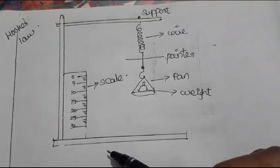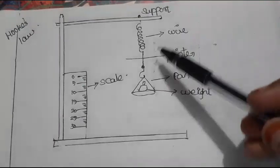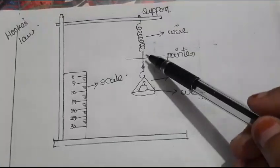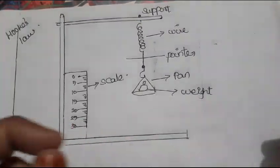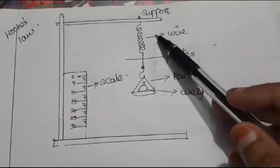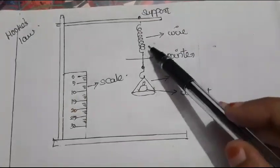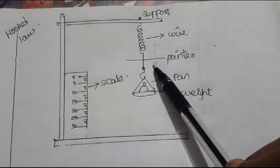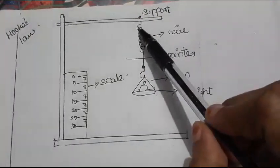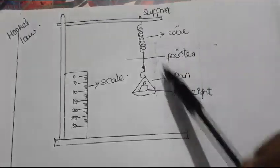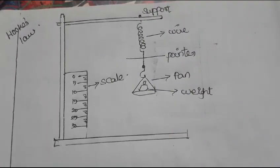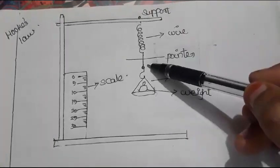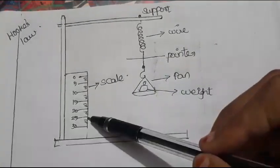To verify this with an experiment, consider a wire fixed at a support at one end. The wire has a certain length and cross-sectional area A. A pan and a pointer are attached to the free end of the wire. The extension produced on the wire is measured using a vernier scale arrangement. When a load is added to the pan, the wire is stretched and the extension produced is measured.